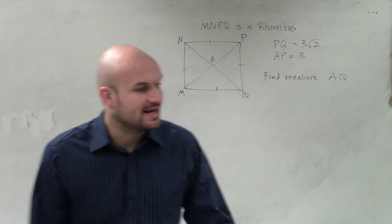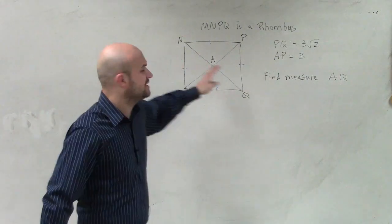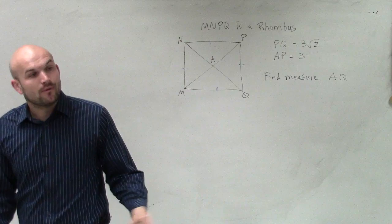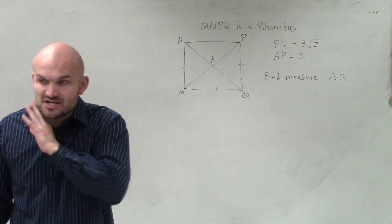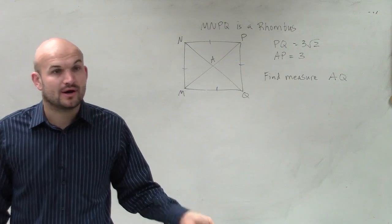We also know that the diagonals, they bisect them, just like any parallelogram. They cut each diagonal in half. However, the diagonals are not equal in measurements like they were for a rectangle and a square. So your diagonals are not always equal.